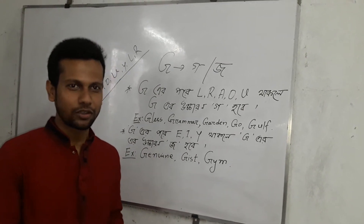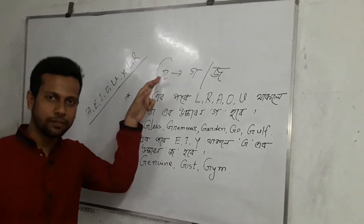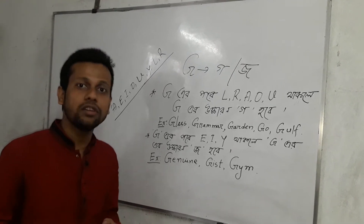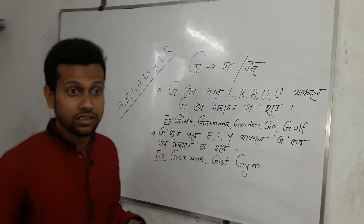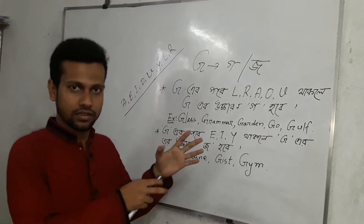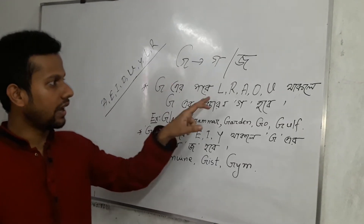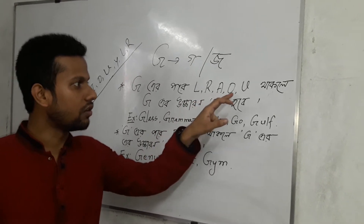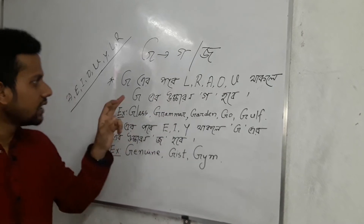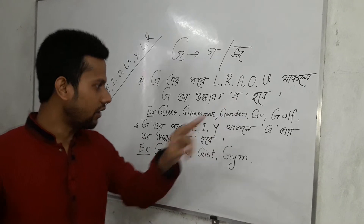Today we are going to discuss about G. How do you pronounce G? After some letters we pronounce it as 'Go' and after others as 'Jo'. We have to clear up some confusion: keep in mind that after G, the letters L, R, A, U, and O will cause G to be pronounced as 'Go', not 'Jo'. For examples: